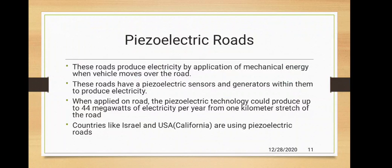When this technology is applied on roads, it has been confirmed by countries like the USA and Israel that these roads can produce up to 44 megawatts of electricity per year for one kilometer stretch of road.